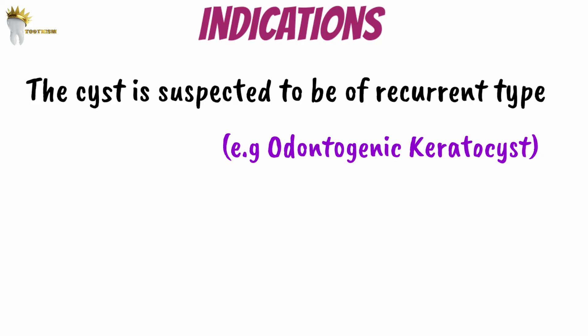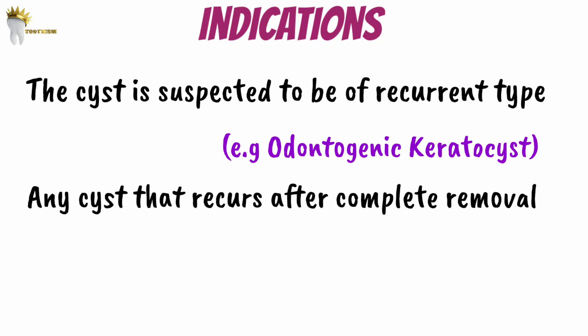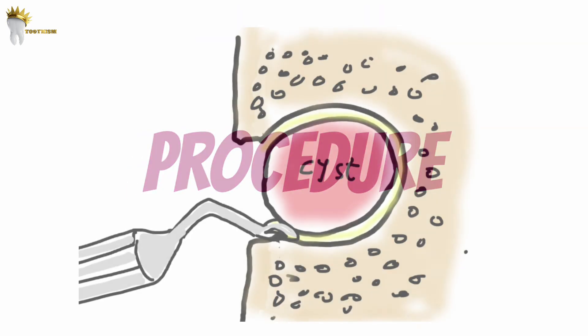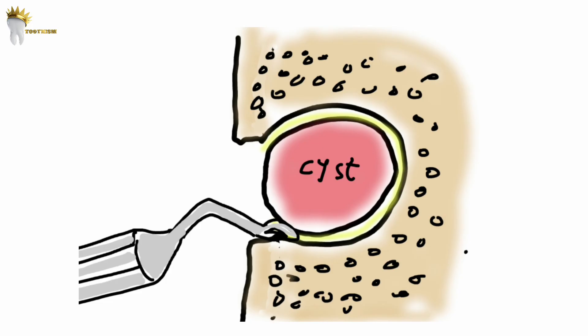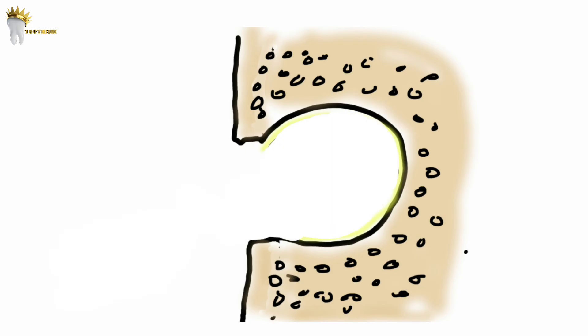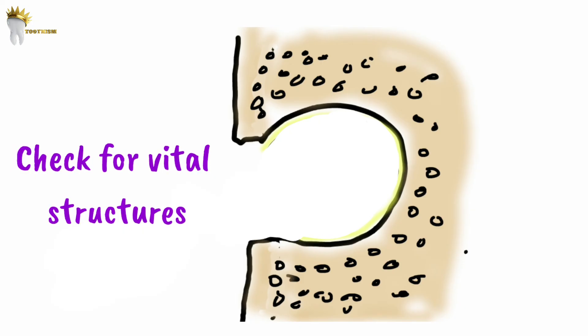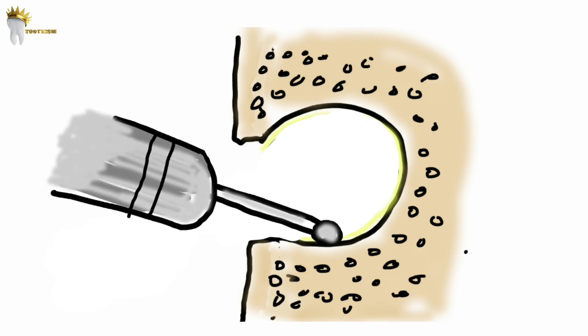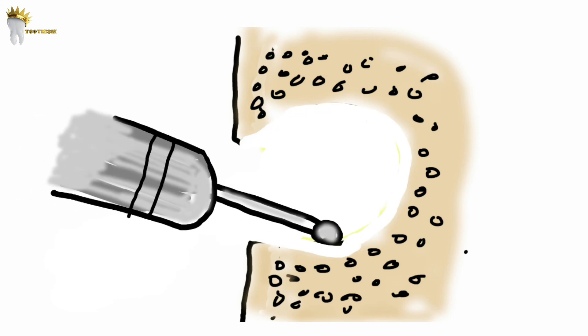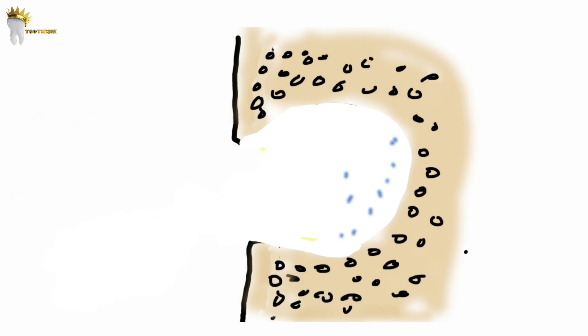The second indication for enucleation with curettage is any cyst that recurs after it was completely removed. Regarding the procedure: after the cyst has been enucleated and removed, we should first check the bony cavity to see if there are any vital structures around. Next, we remove a 1-2 mm layer of bone around the complete periphery of the cystic cavity using a sharp curette or a bone burr under sterile saline irrigation, taking care not to damage any vital structures. The cavity is then irrigated and closed.